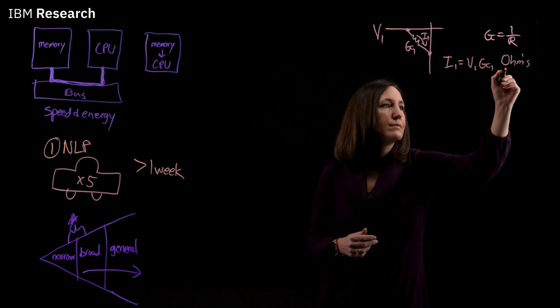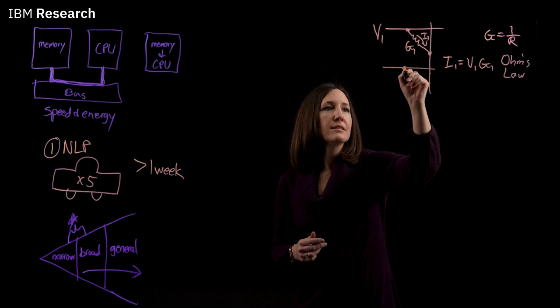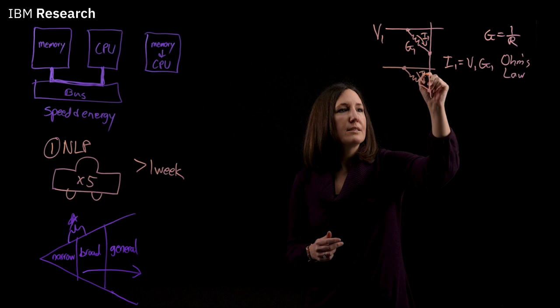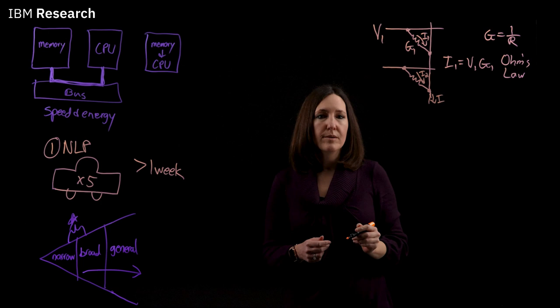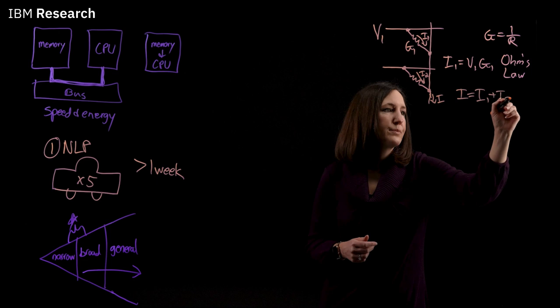Now, if we extend our array and we add a second row of devices, the current through this device can be expressed as I2, and we can calculate the current coming out at the bottom of our column as I is equal to I1 plus I2. And this is just Kirchhoff's law.